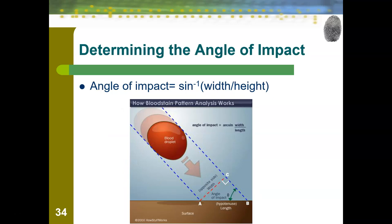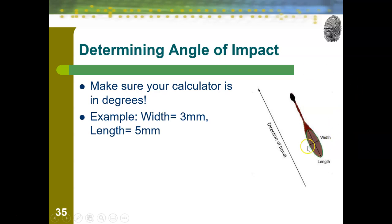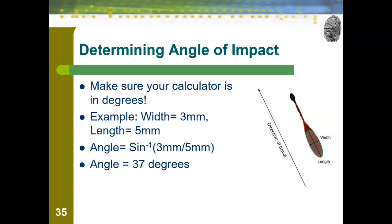We can actually mathematically calculate the angle of impact with a pretty simple formula. Your calculator needs to be in degrees. The formula is the inverse sine of width divided by length. In an example problem, you look at the blood droplet and measure the width — side to side — as 3 millimeters, and the length — up and down — as 5 millimeters. Note: never include the tail in your measurements; do the largest oval you can, excluding the tail. You would enter inverse sine of 3 divided by 5, and the answer is 37 degrees.